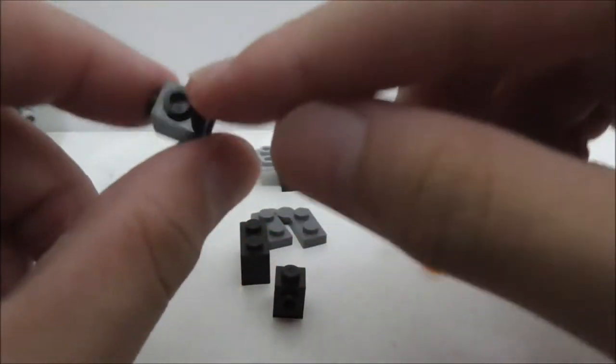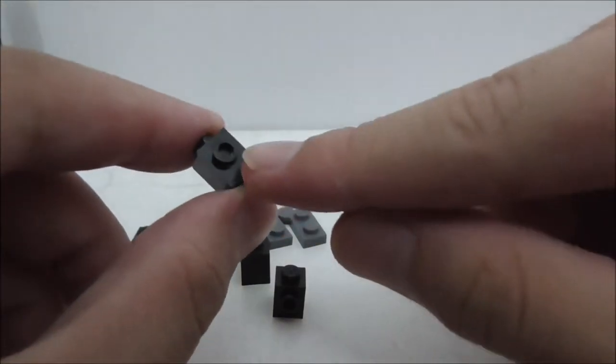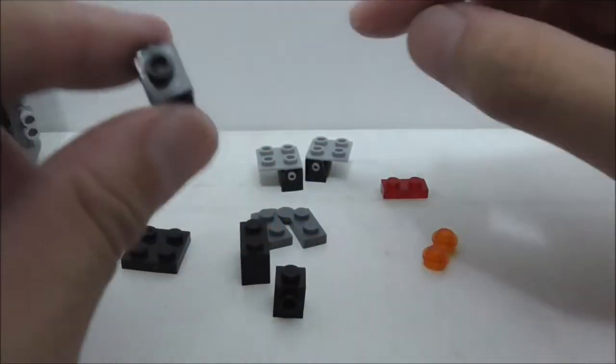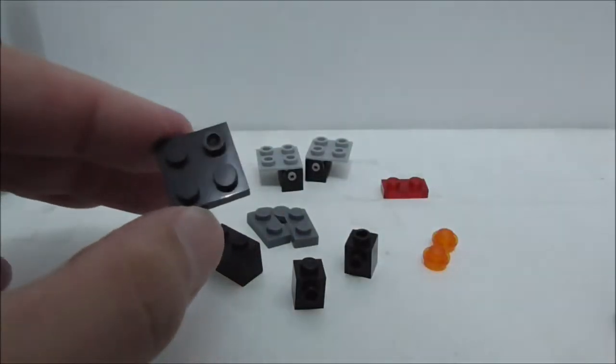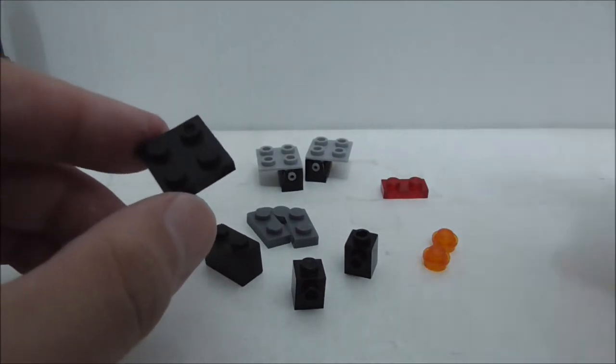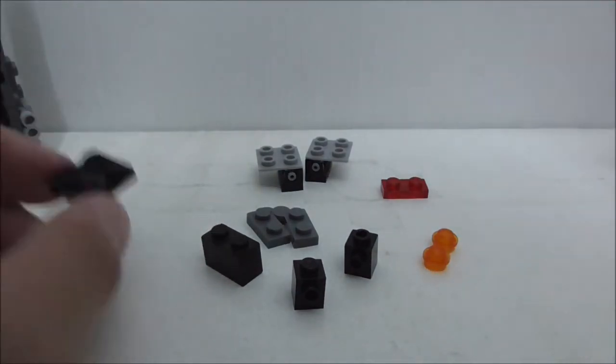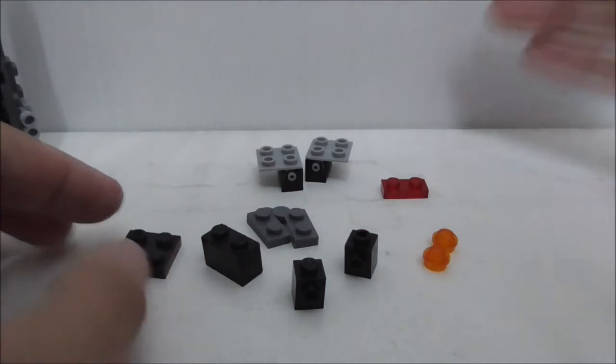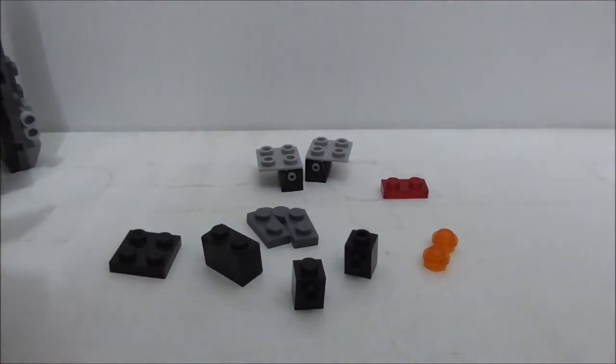You also need two orange studs and two of these modified 1x1 brick pieces with this stud right here. You need a 1x2 black brick and also this 2x2 black brick which is very common. That's it for all the pieces you need.